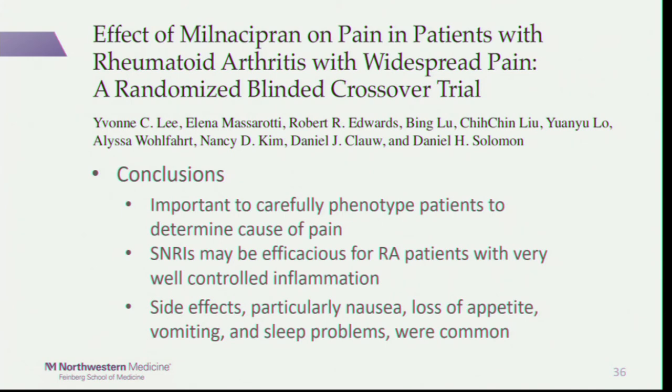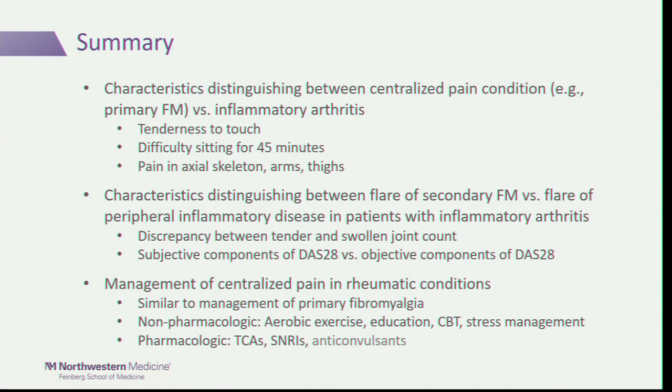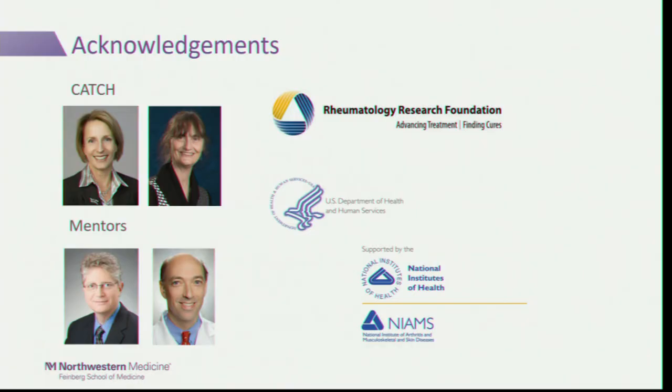In closing, the key take-home points are: characteristics distinguishing centralized pain from inflammatory arthritis include tenderness to touch, difficulty sitting for 45 minutes, and pain in the axial skeleton, arms, and thighs. When a patient has an inflammatory condition, discrepancies between the tender and swollen joint count or subjective versus objective components of the DAS can help distinguish a fibromyalgia flare from a disease flare. Management is very similar to primary fibromyalgia—many of the strategies discussed throughout this conference apply. Thank you.